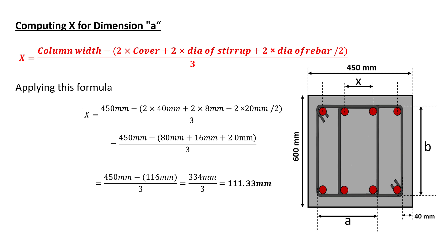The width of column is 450 mm, clear cover is 40 mm, diameter of stirrups is 8 mm and the diameter of main bars is 20 mm. On substituting these values, the value of x will be 111.33 mm.